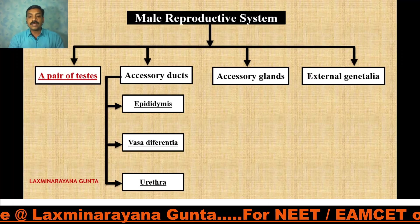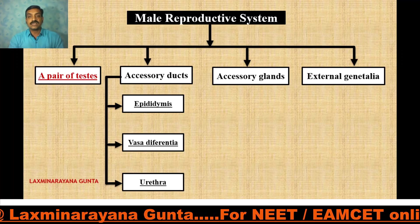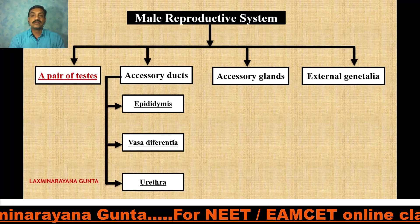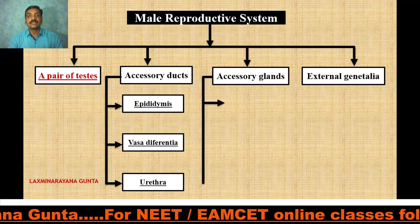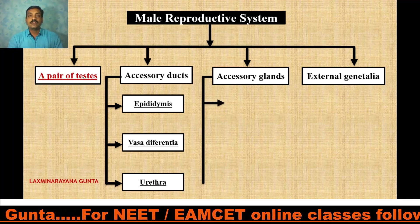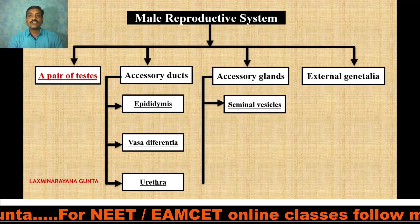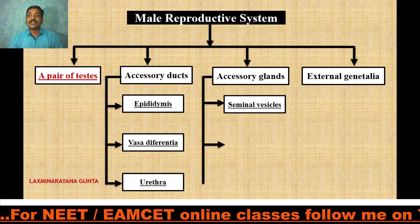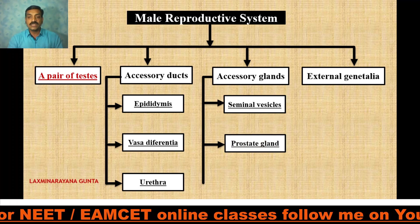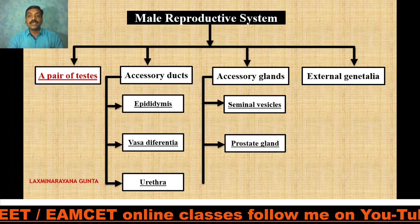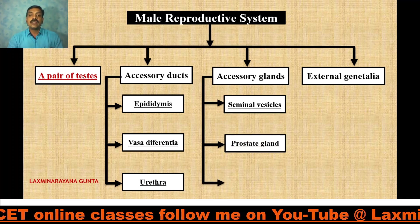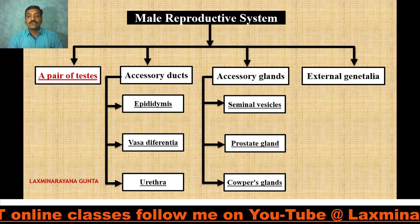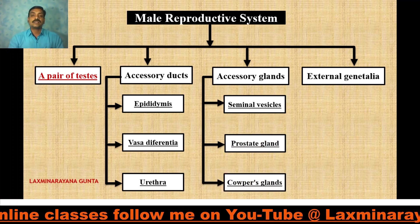Coming to the accessory glands — there are three accessory glands in human males: a pair of seminal vesicles, an unpaired prostate gland, and a pair of Cowper's glands.